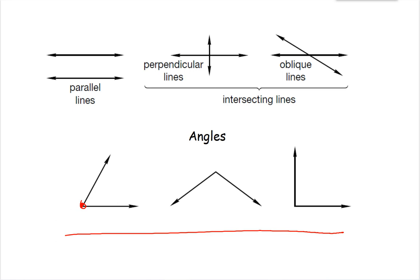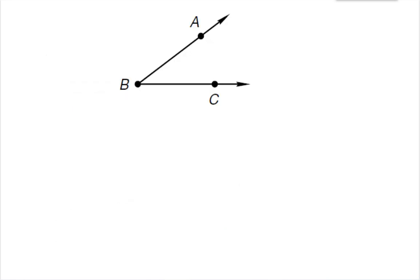The point where an angle intersects is called the vertex. That's where both of the lines come in contact.